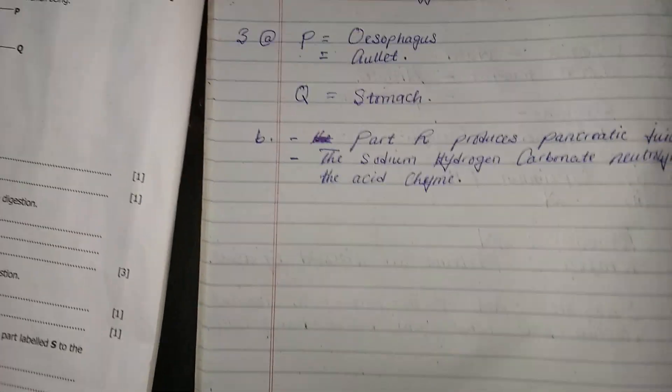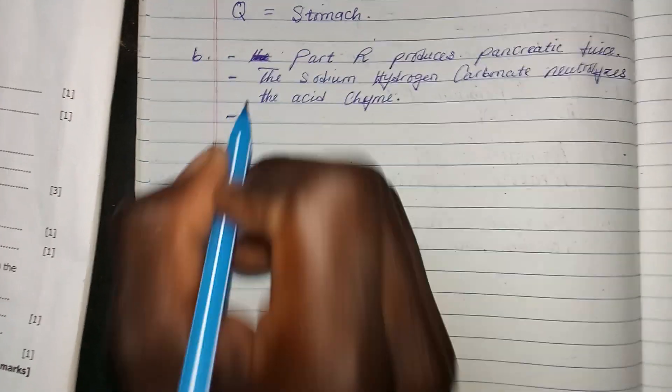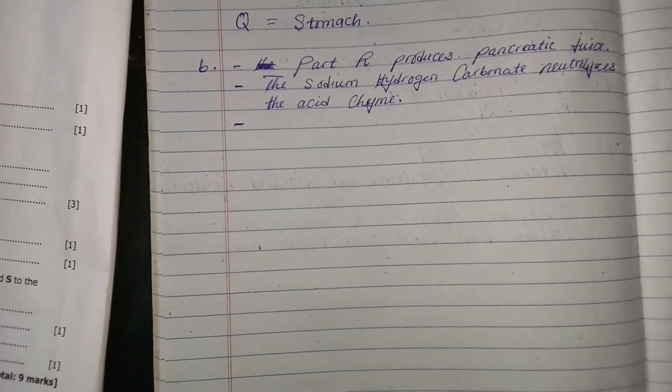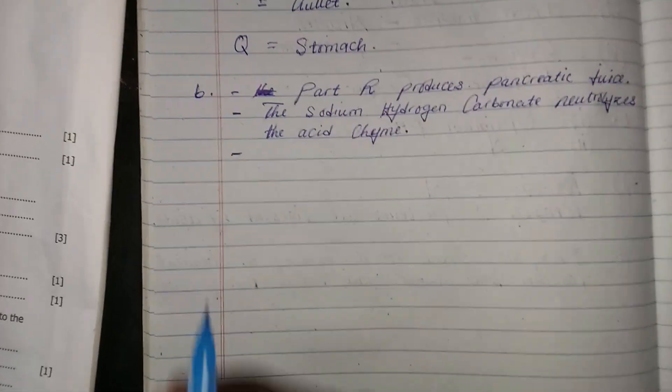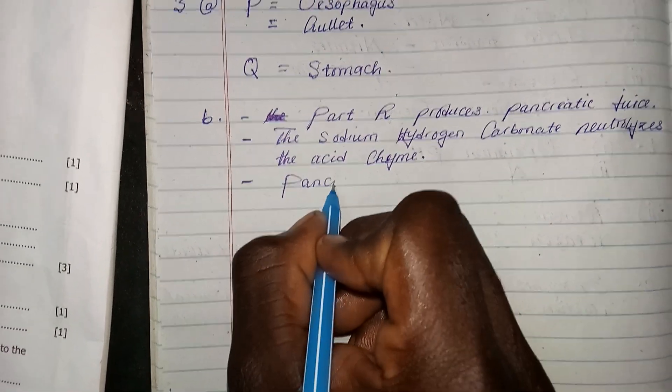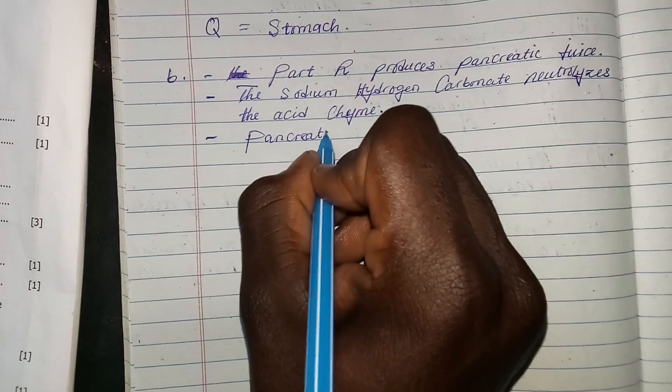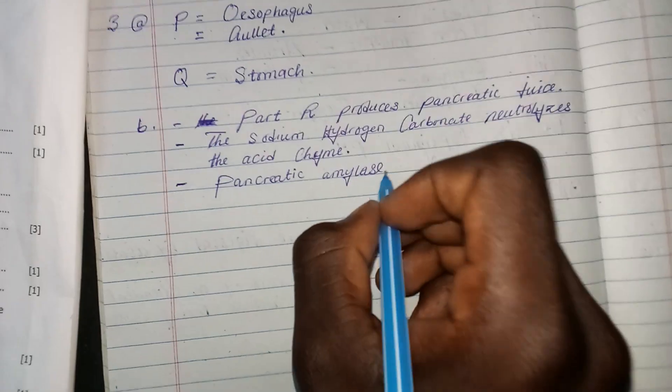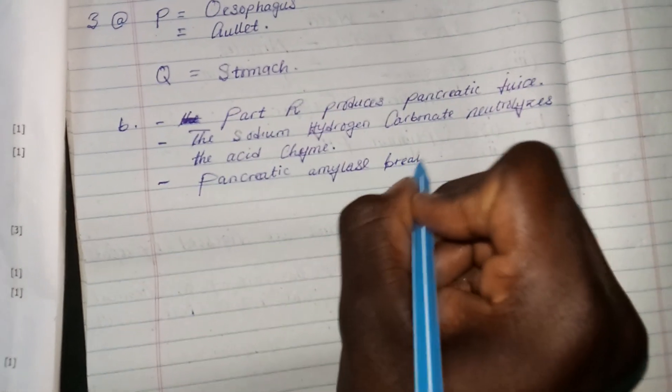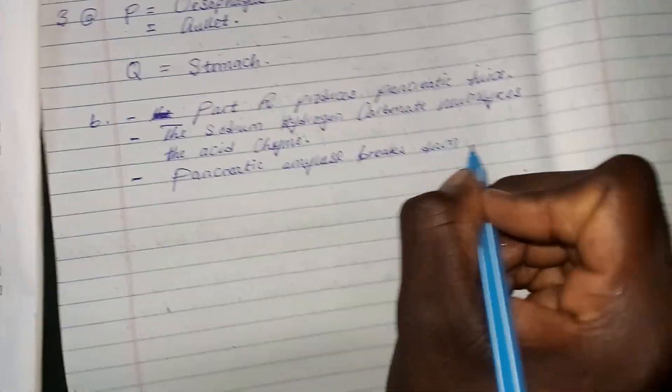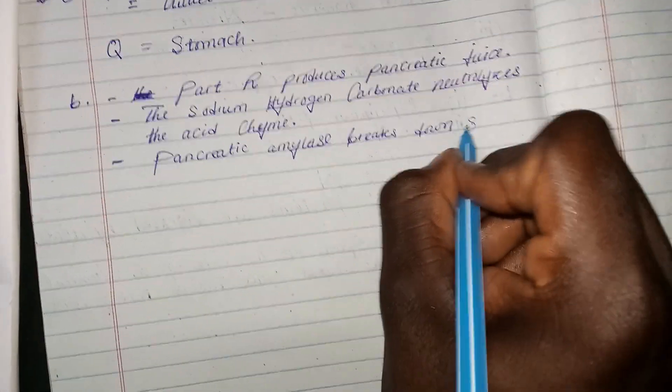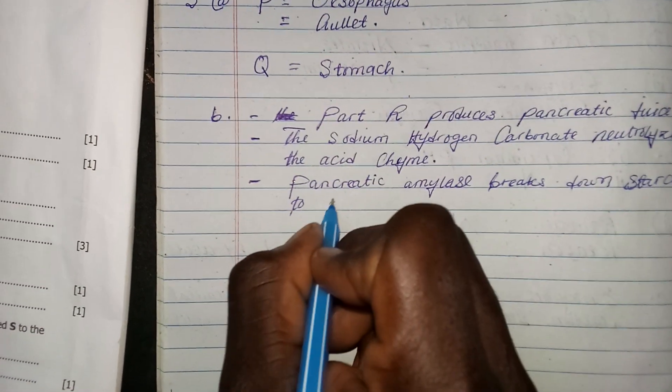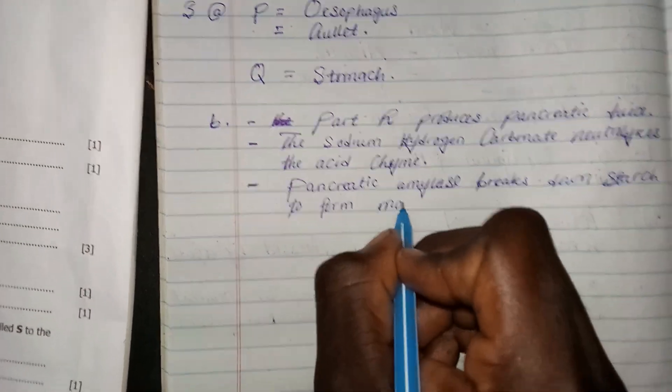The other role played by R is that the pancreatic amylase, which is contained in the pancreas, breaks down starch to form maltose.